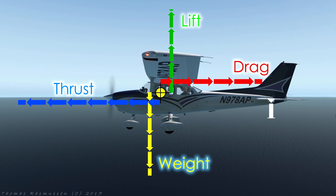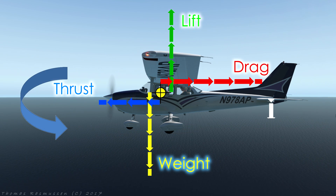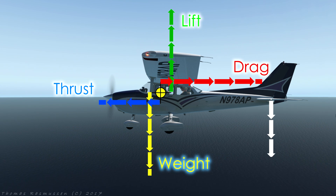This is done by trimming the aircraft nose down, achieved by decreasing the downforce by the horizontal stabilizer. Furthermore in time, as speed increases, lift produced by the wings will also increase which will make the aircraft start to climb. If we decreased thrust, this would cause a nose down moment which would need to be compensated by trimming the aircraft to increase downforce by the horizontal stabilizer. Again in time, as speed decreases, lift produced by the wings will decrease and the aircraft will start to descend.